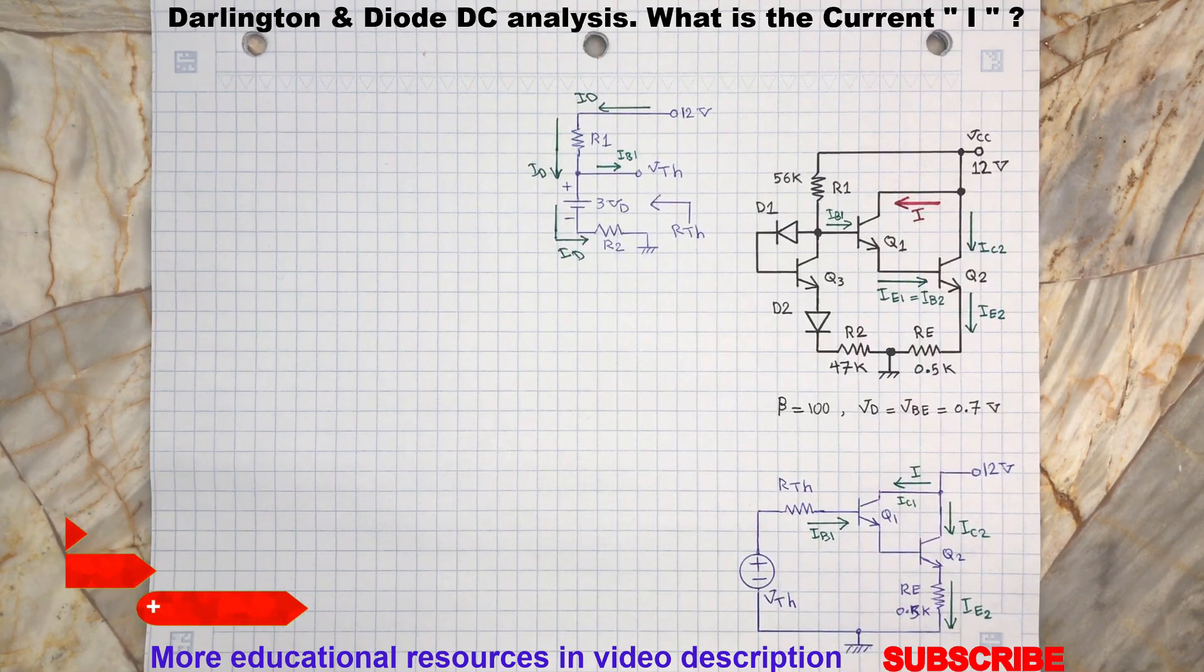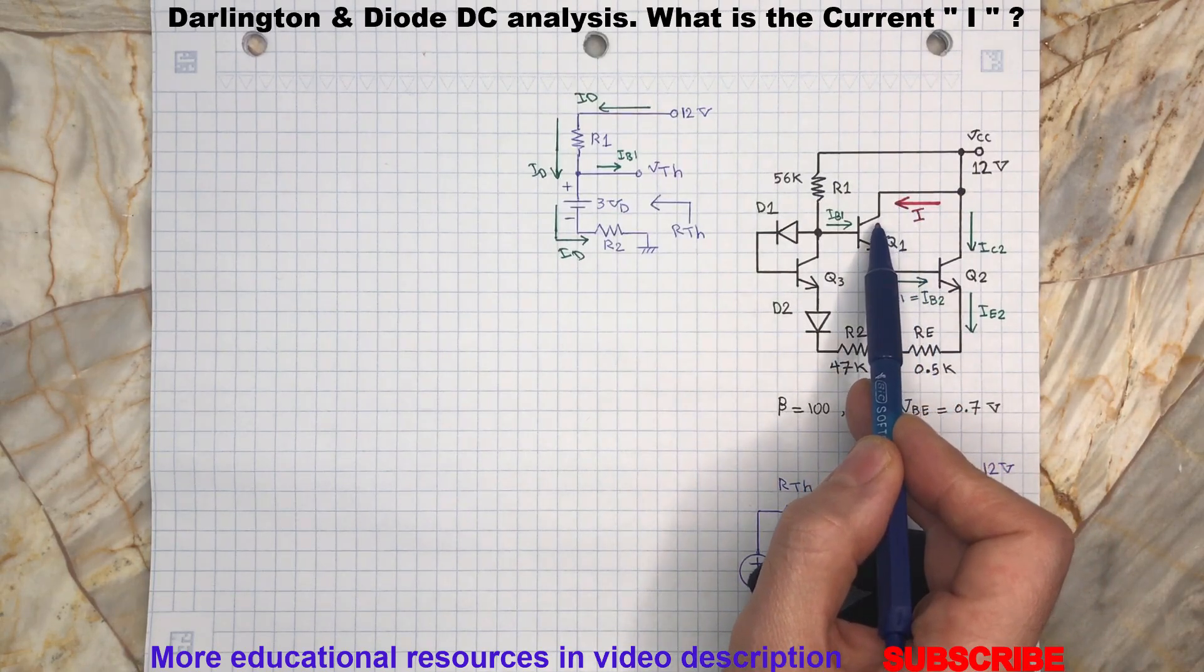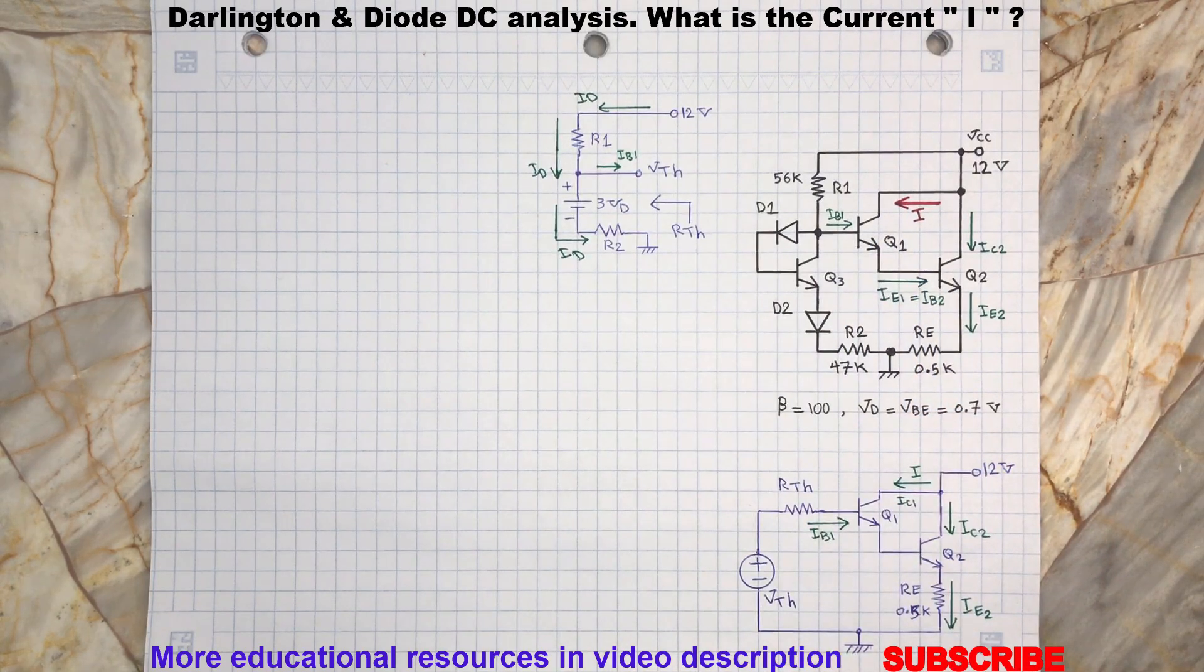Hello and welcome back to another electronic circuit review. For this Darlington circuit, we are going to determine the value of current I. As we can see here, the current I is the same as the current flowing through the collector of transistor Q1. So if we find the current flowing through the base of transistor Q1, then since the beta is given, we can simply calculate the current I.